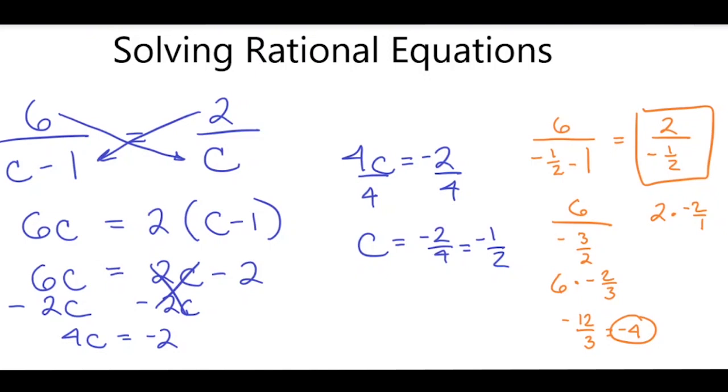We simplify that, and it's negative 4 over 1, which is negative 4. Both sides are negative 4, so C equals negative 1 half.